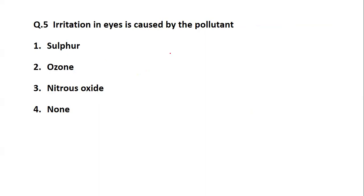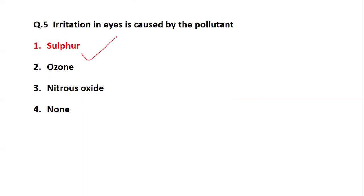Question: irritation in eyes is caused by which pollutant? There is a table you should memorize covering effects like eye irritation, throat issues, and skin rashes linked to specific pollutants. The options are sulfur, ozone, nitrous oxide, or none. It is a straight factual question — irritation of eyes is caused by sulfur. They may also ask about specific syndromes or conditions and ask which pollutant is responsible.